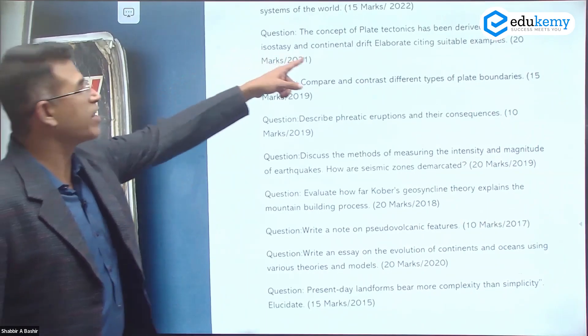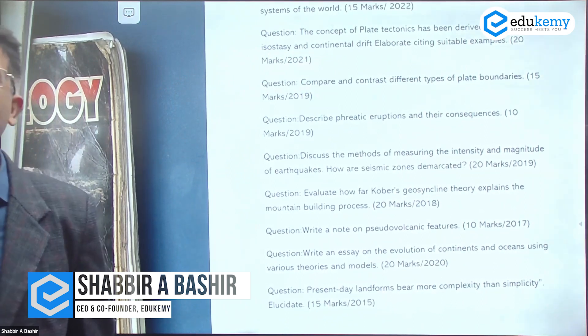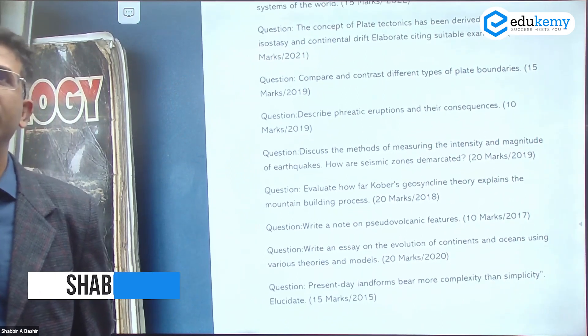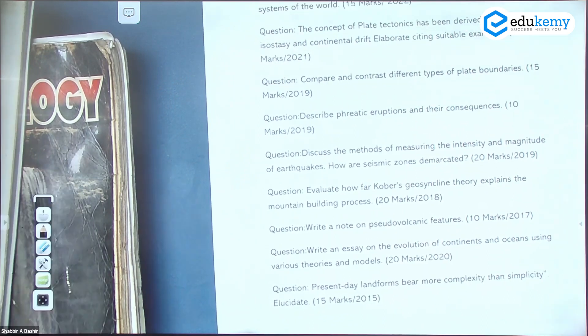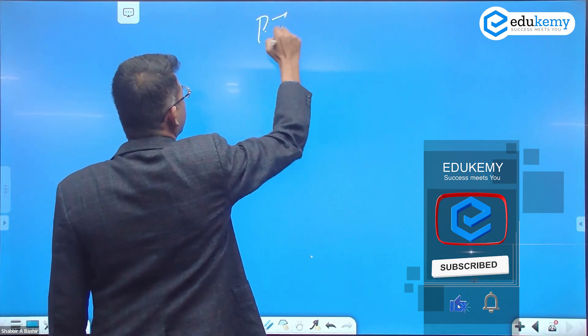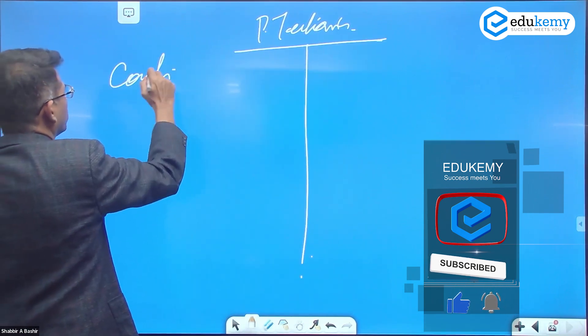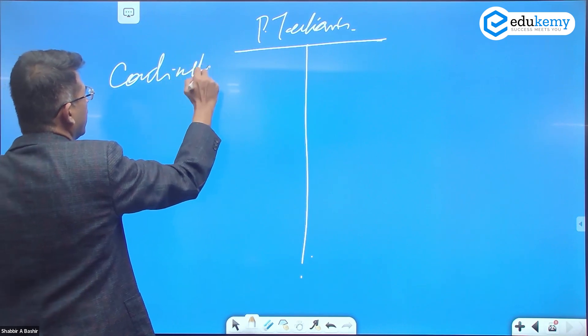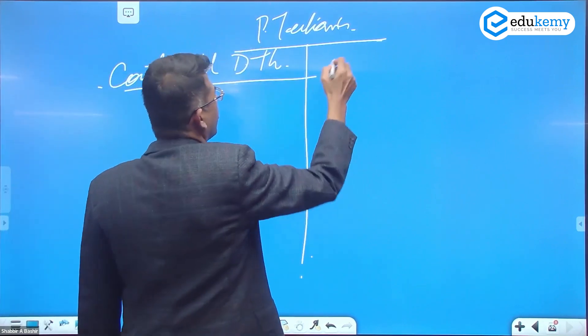Okay, the concept of tectonics has been derived from isostasy and continental drift. Elaborate using suitable examples - 20 marks. So here we go: plate tectonics. What are the concepts it takes from continental drift theory and what concepts it takes from isostasy?